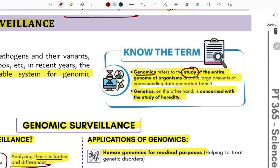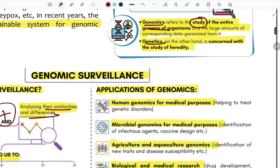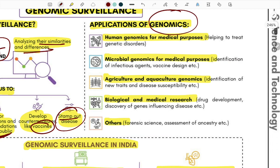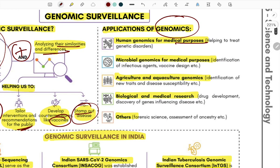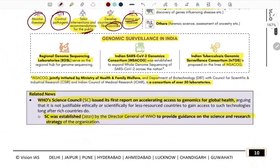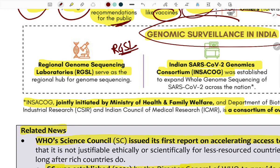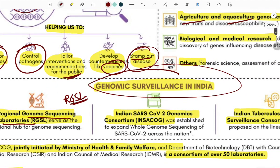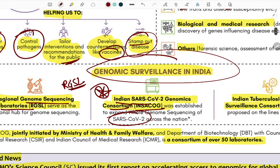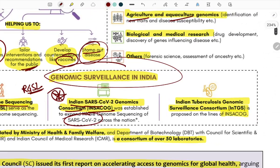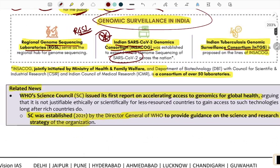Genomics is a field of study involving organisms' genetics with applications in computer science, medical research, and agriculture. Key genomic surveillance initiatives include data lakes, RGSL (Regional Genomic Sequencing Labs), and INSACOG — the Indian SARS-CoV-2 Genomics Consortium.